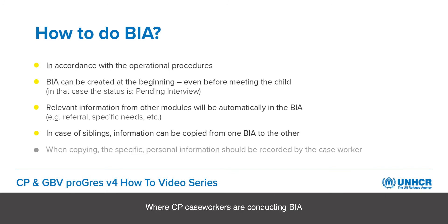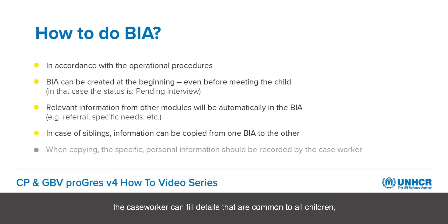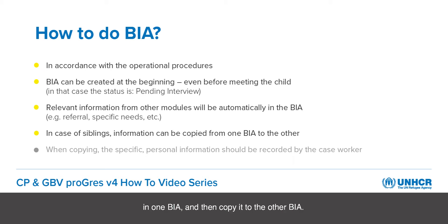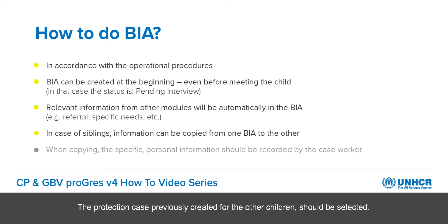Where CP caseworkers are conducting a BIA for siblings in the same household, the caseworker can fill details that are common to all children — for example, basic needs and care arrangements — in one BIA and then copy it to the other BIA. Once they have saved the BIA, they can select the option to copy it in the ribbon. The protection case previously created for the other children should be selected, and basic information will be copied from the initial BIA to the others.